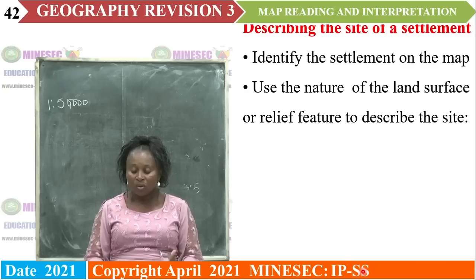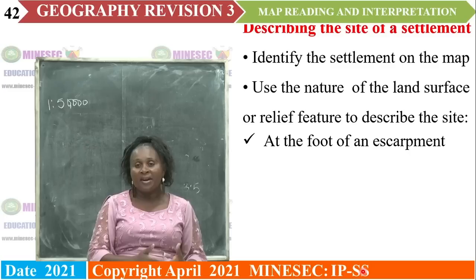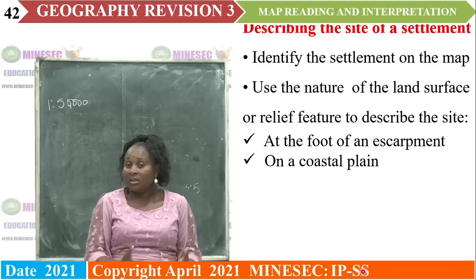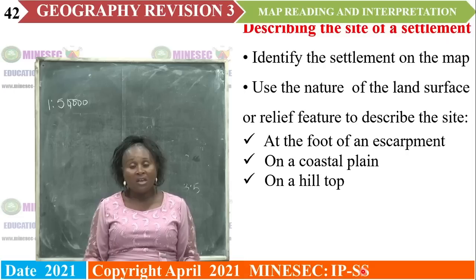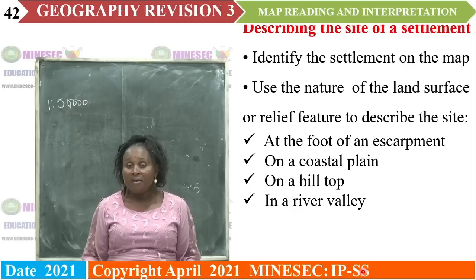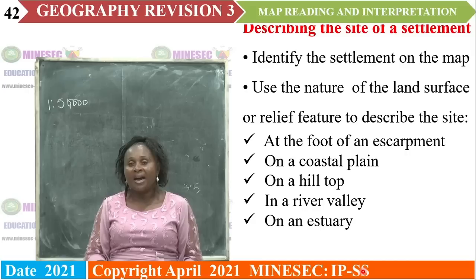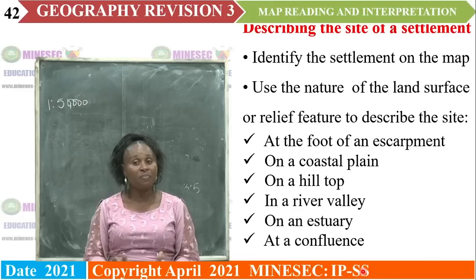Settlement can be at the foot of an escarpment — if so, it is a foot of escarpment site. If it is on a coastal area or a plain, it is a coastal site settlement. It can be on top of a hill — a hilltop settlement. Along a river — a riverside settlement. At an estuary or mouth of a river — estuary site settlement. It can also be at the confluence where two rivers meet — confluence site settlement.